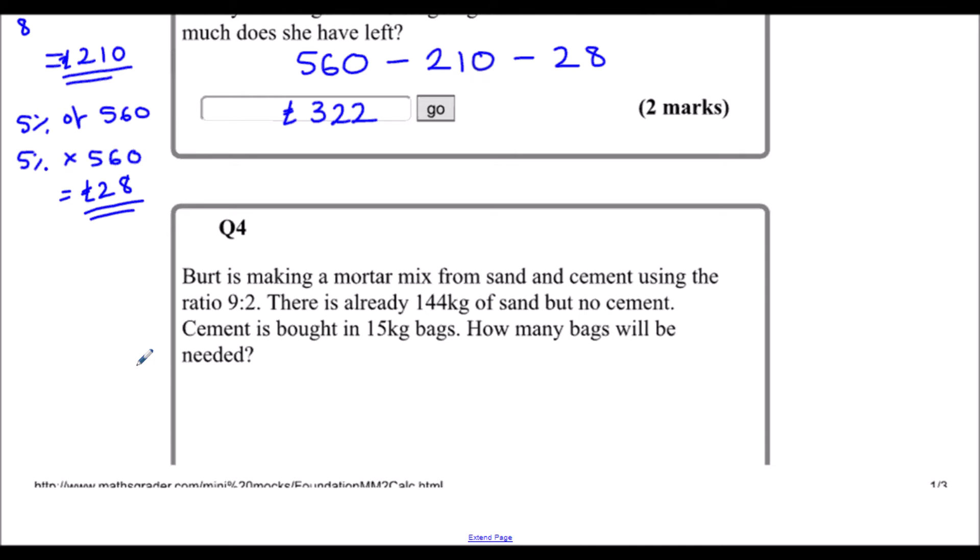Question 4. Bert is making a mortar mix from sand and cement in the ratio 9 to 2, so 9 parts to 2 parts. There's 144 kilograms of sand, but no cement. How many bags will you need? And then 15 kilogram bags. In the ratio 9 to 2, it's sand and cement. There's 144 kilograms of sand, how much cement? What do we times 9 by to get 144? To work that out, we can do 144 divide 9, and that says 16. So we're going to multiply by 16. So 9 times 16 makes 144, 2 times 16 is 32.